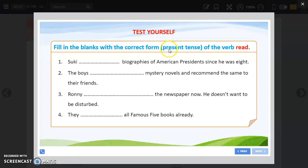Test yourself. Fill in the blanks with the correct form of the verb. Suki [blank] biographies of American presidents since he was eight. The verb is read. Suki has been reading. The boys read mystery novels and recommend the same to their friends. Ronnie is reading the newspaper now. See, there is 'now,' so I used is reading. He doesn't want to be disturbed.